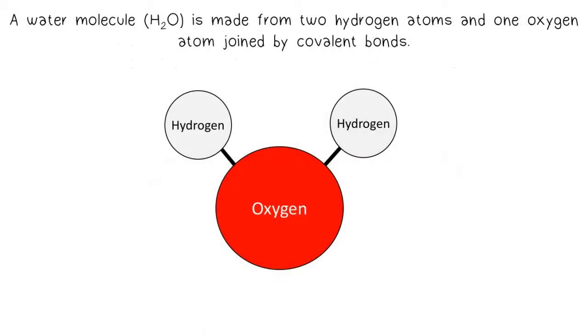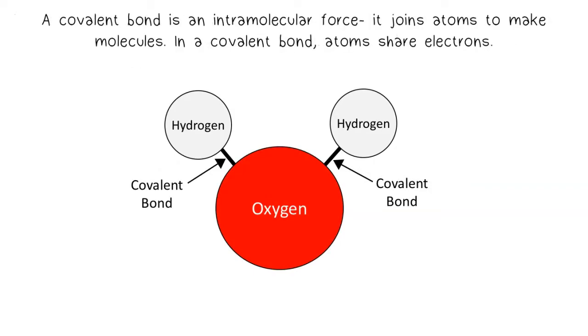A water molecule is made from two hydrogen atoms and one oxygen atom joined by covalent bonds. A covalent bond is an intramolecular force. It joins atoms to make molecules. In a covalent bond, atoms share electrons.